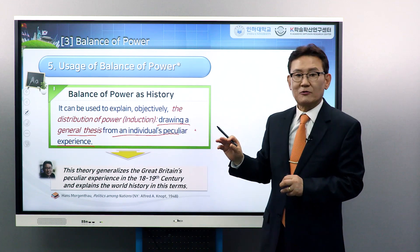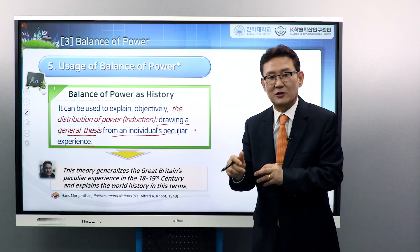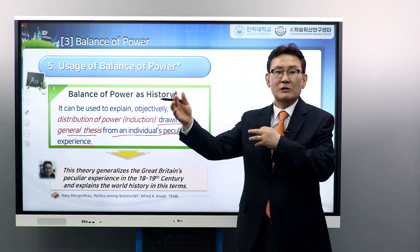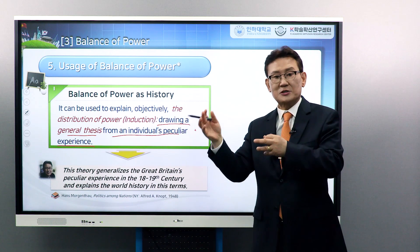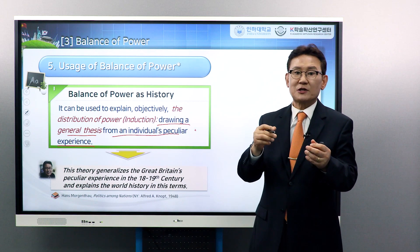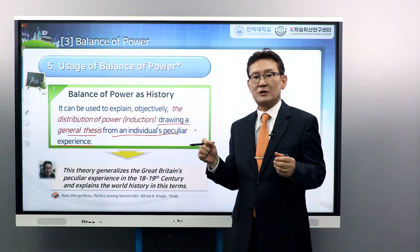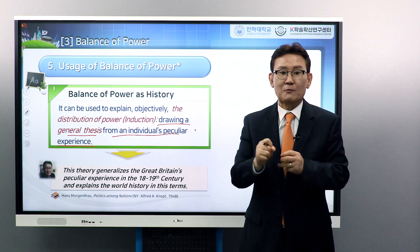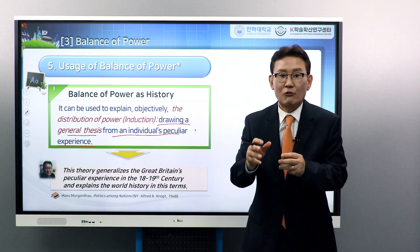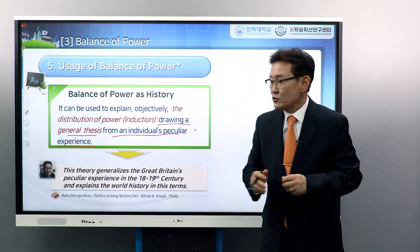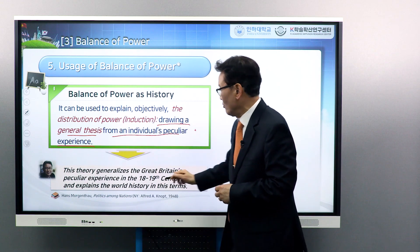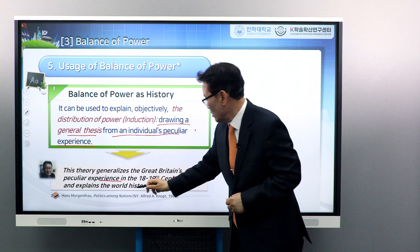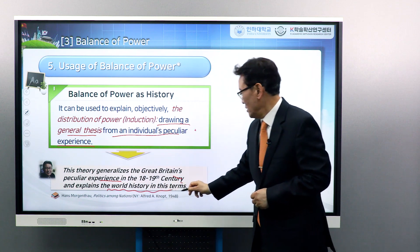I explained about the UK's diplomacy in the 19th century, making alliances with France or Russia or Prussia. So as a result of UK's experience in history, we drew a general thesis making balance of power or making equilibrium. This theory generalizes Great Britain's peculiar experience in the 18th to 19th century and explains world history in these terms.